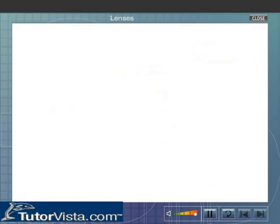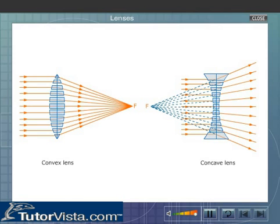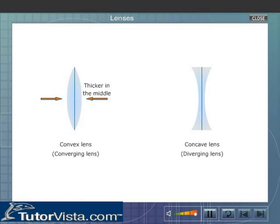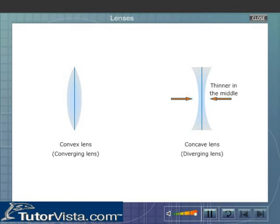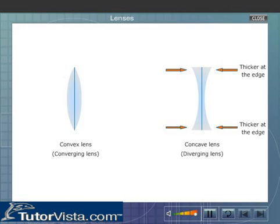Based on this, lenses are classified as convex and concave lenses. A lens that is thicker in the middle than at the edges is known as a convex or converging lens, whereas the lens that is thinner at the middle than at the edges is known as a concave or diverging lens.